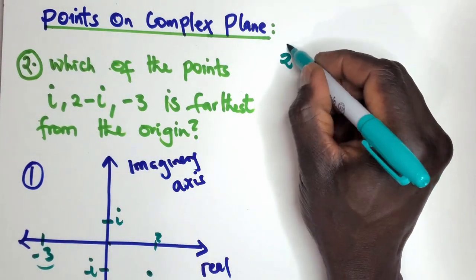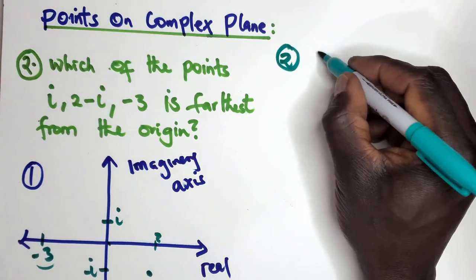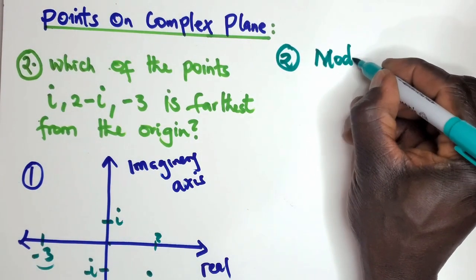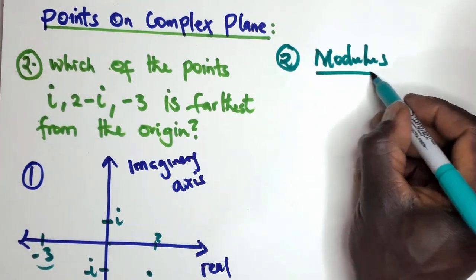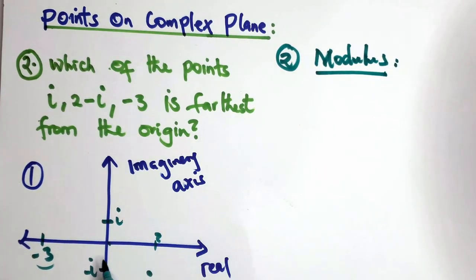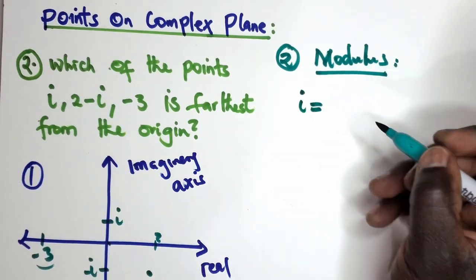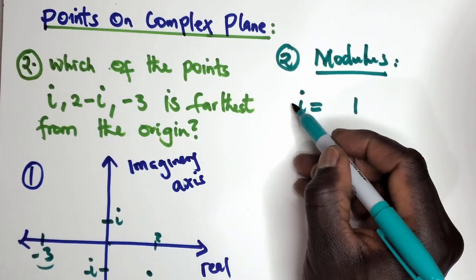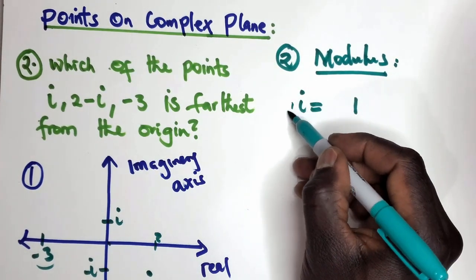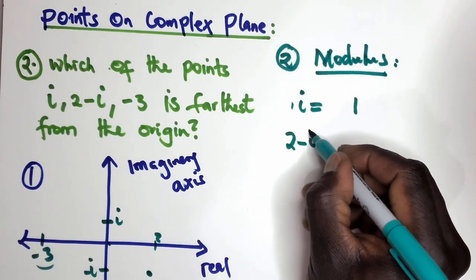Another way to do that is just to get the modulus of all the points. The modulus is just the distance from the origin. The modulus of i is one — you take the one here and then square it to give you one. For 2 minus i,